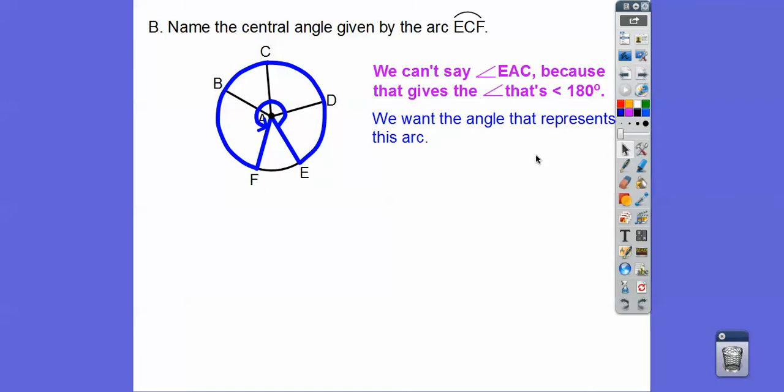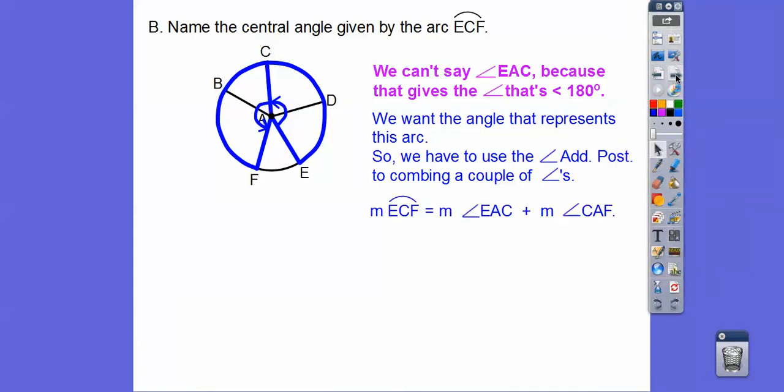So that's the angle that we want. We want that whole arc. So we're looking at this whole arc. So what angle are we going to do? We're going to use the angle addition postulate and then add a couple of those angles together right there. So that's the best I can do on that one right there. So E-C-F is equal to E angle, arc E-C-F is equal to angle E-A-C plus angle C-A-F right there.